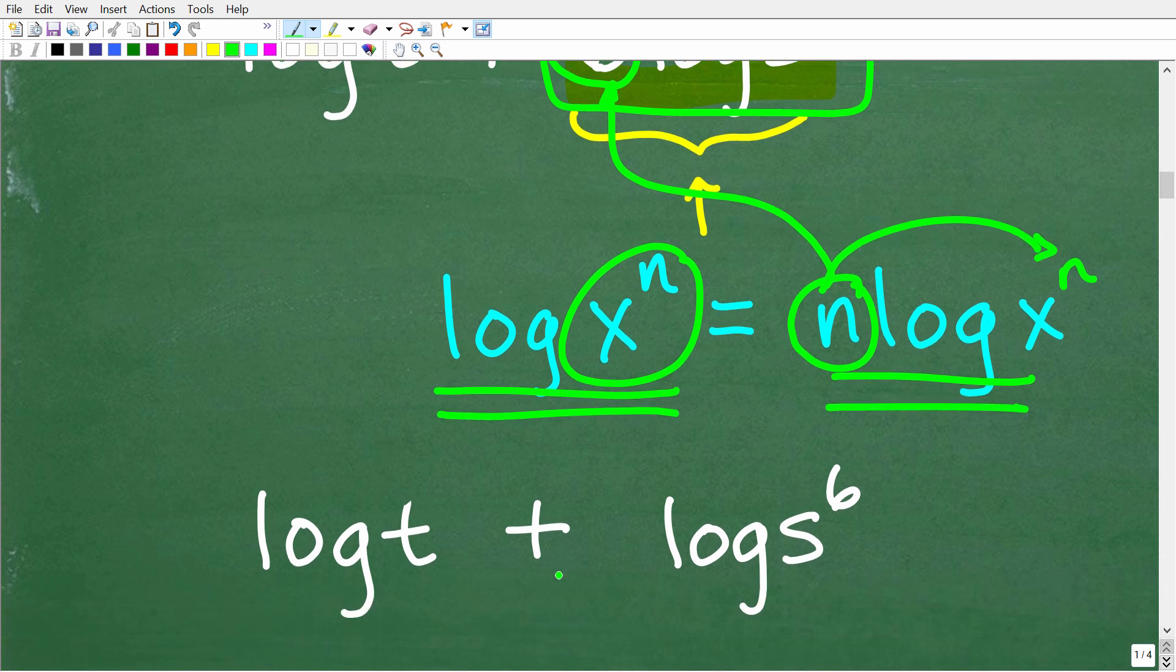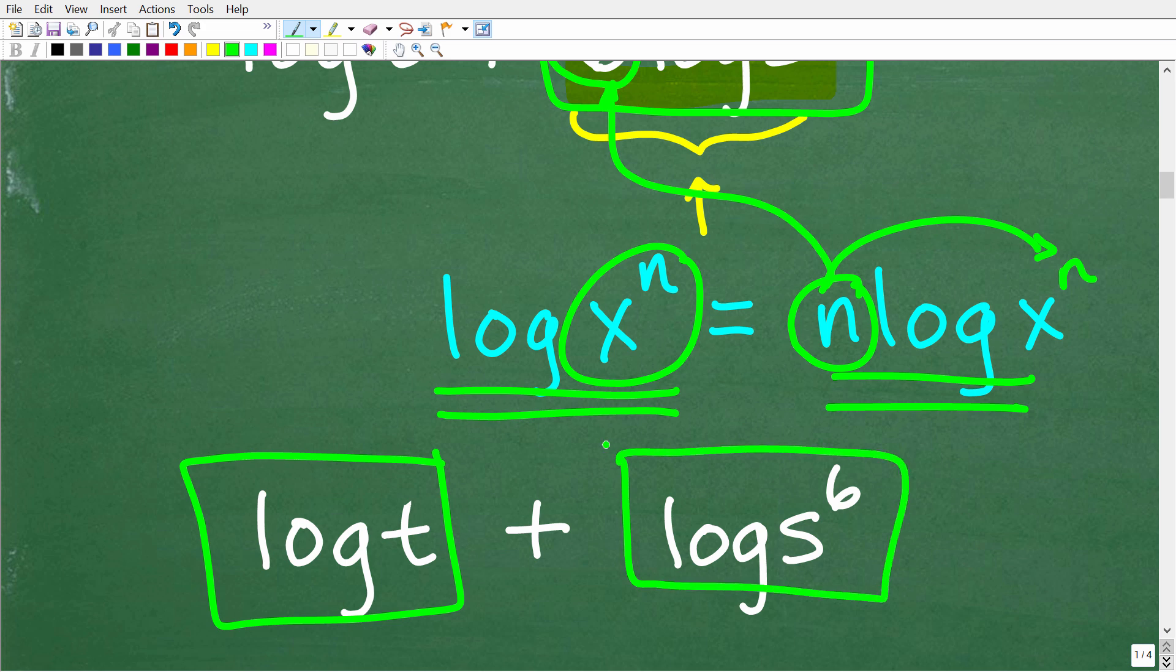Okay, so now we have log t plus log s to the 6 power. Okay, so now we have one logarithm plus another logarithm. Now, one thing that I need to stress here and just kind of thinking about these properties, they only work. These properties of logarithms work when the bases are the same. In other words, here we have the common log or log base 10. This wouldn't be the case if we had like log base 10 and like log base 7. So the bases need to be the same in order to apply these properties.